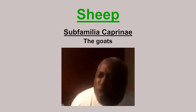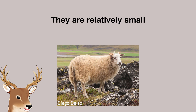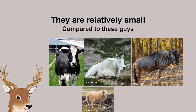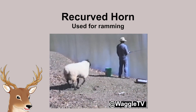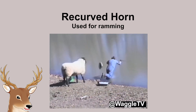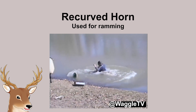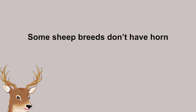Sheep are relatively small compared to other bovids at least. They have a recurve horn, like a spiral. This type of horn is used for ramming, rather than stabbing or clashing between horns. While most sheep have horns, some breeds don't. These kinds of breeds are called polled.